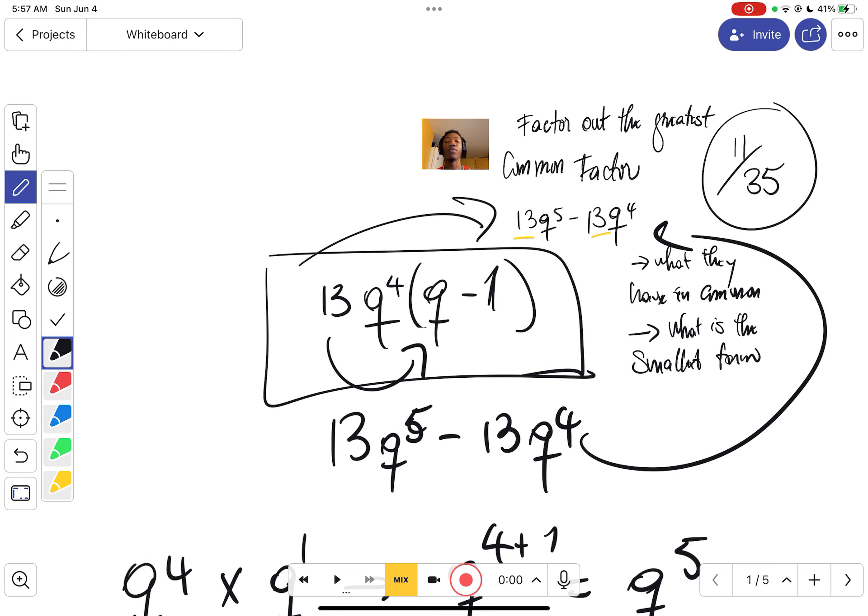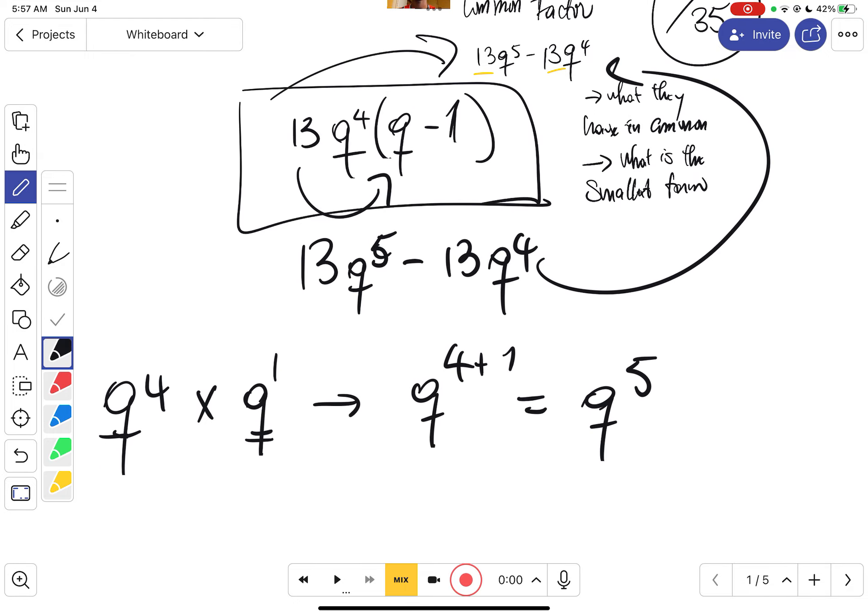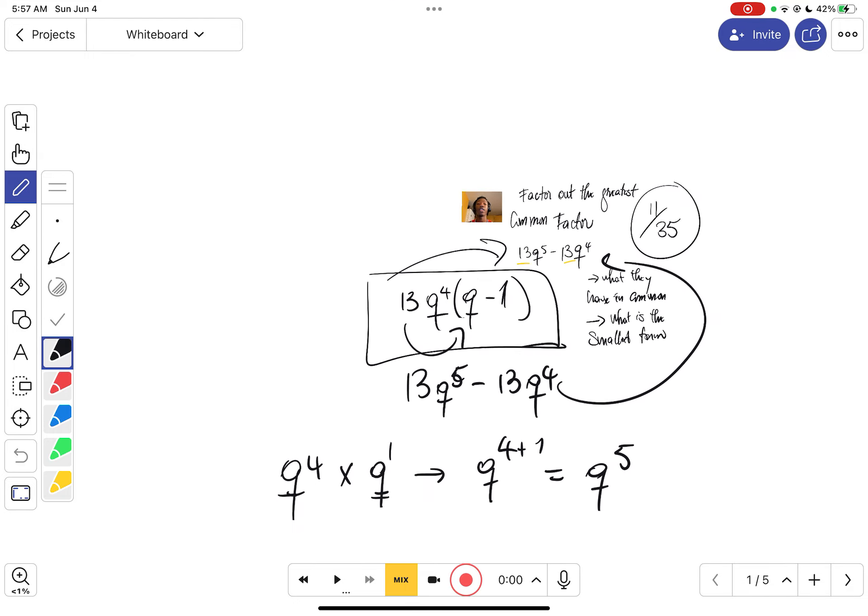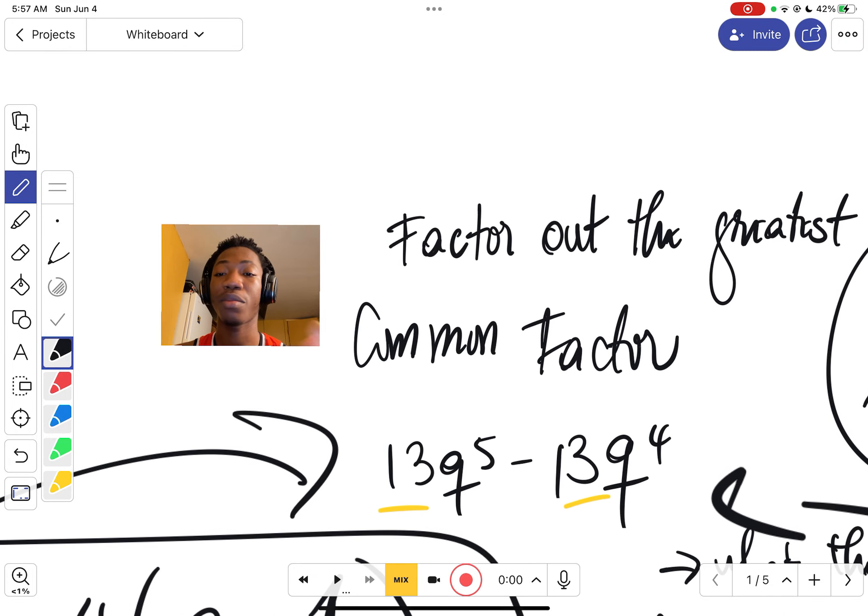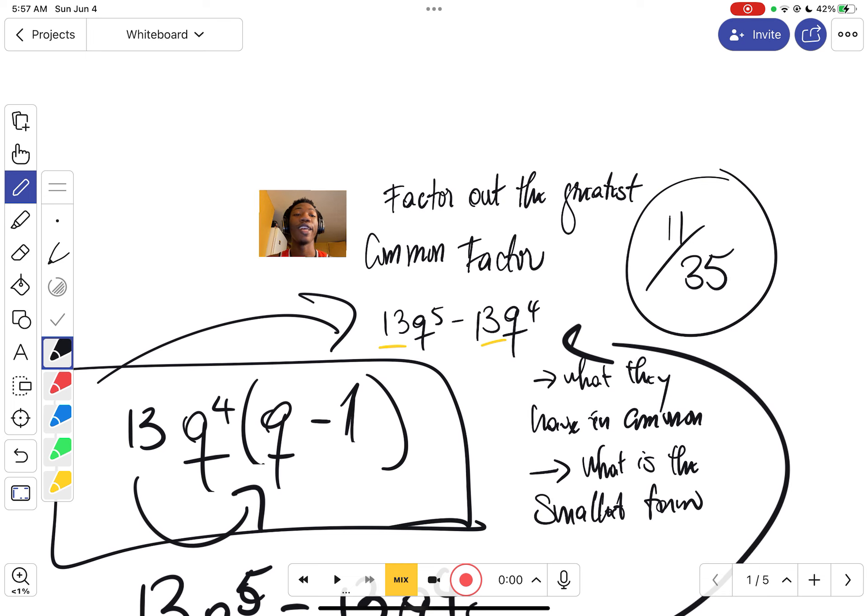13q^4 times (q - 1), that's the solution to the problem. I hope that it was easier for you all. Let's get into the other one. That's the entire 11 over 35. If we can do it, let's go.